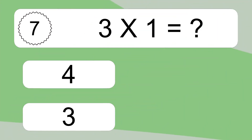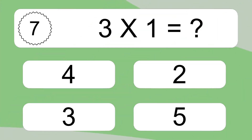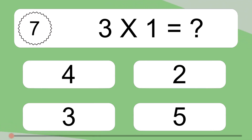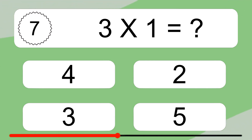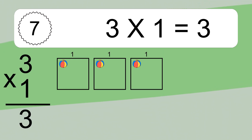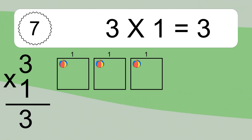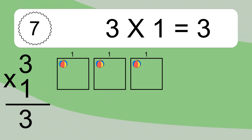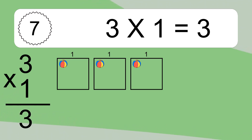3 times 1 equals what? We have 3 boxes, and each box has 1 colorful ball inside. If you count all the balls in all the boxes together, you will have 3 times 1 balls. This equals 3 balls.